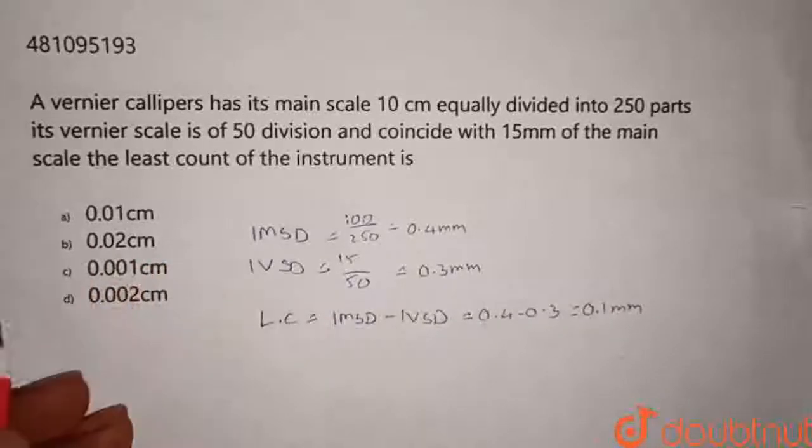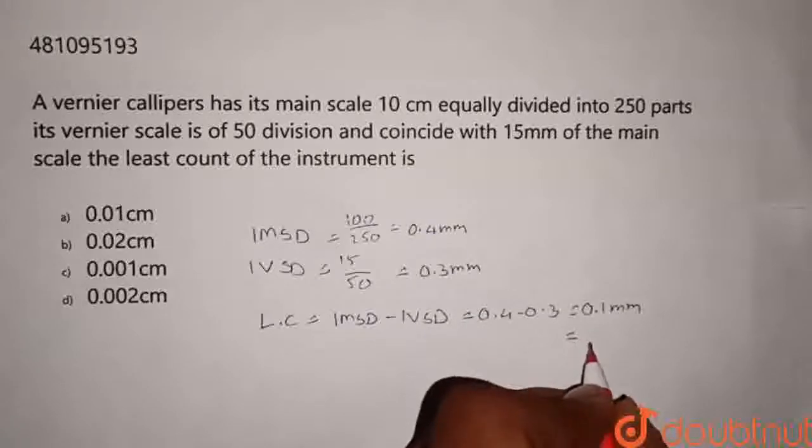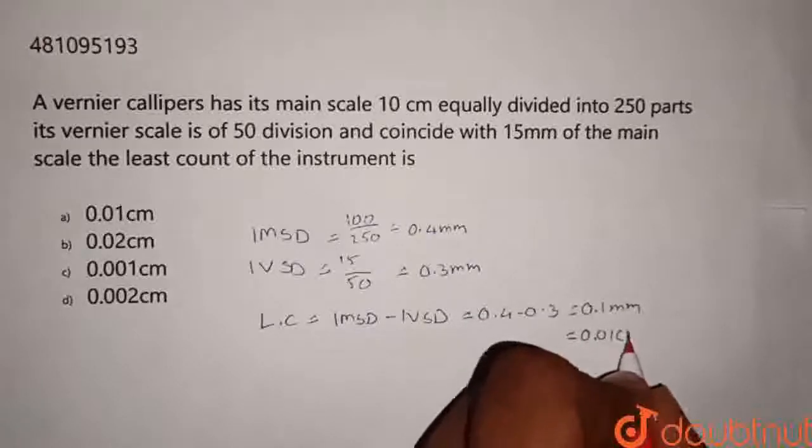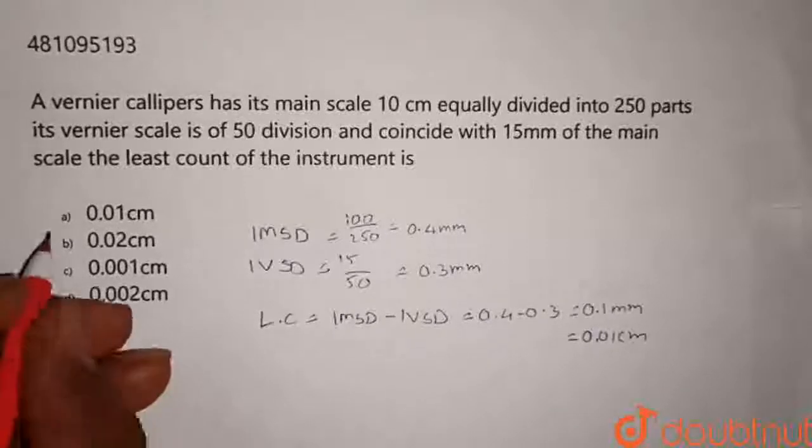As options are in cm, let's convert this into cm. That is equal to 0.01 cm, as 1 mm is equal to 10 power minus 1 cm. Hence, answer is option A.